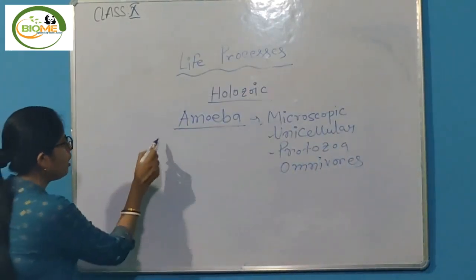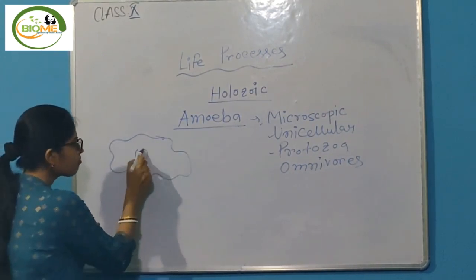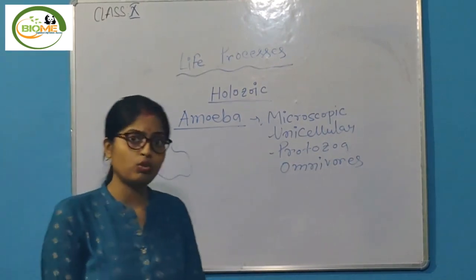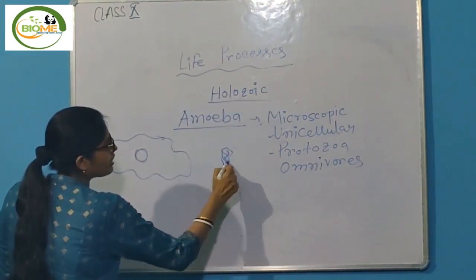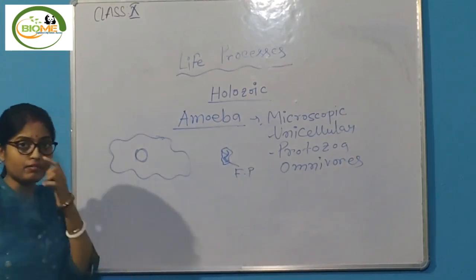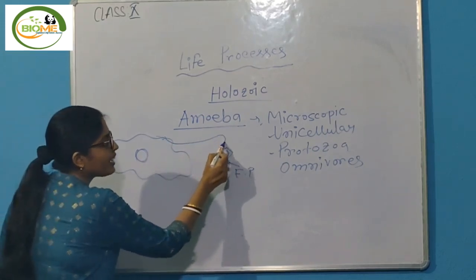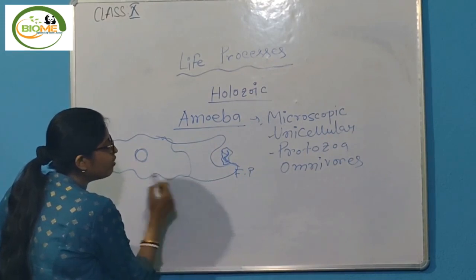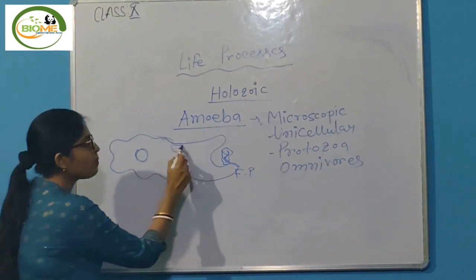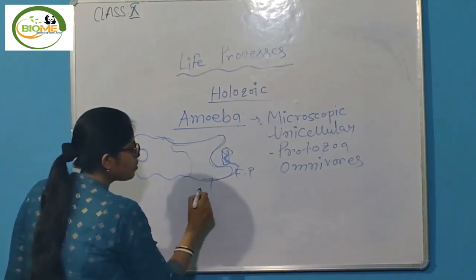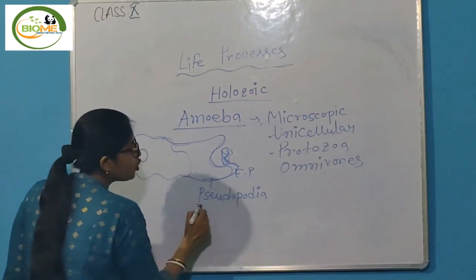Amoeba has an irregular body shape with a vacuole and nucleus — only one cell. When amoeba sees a food particle nearby, the cytoplasm extends and engulfs the food particle. This cytoplasmic extension is known as pseudopodia.